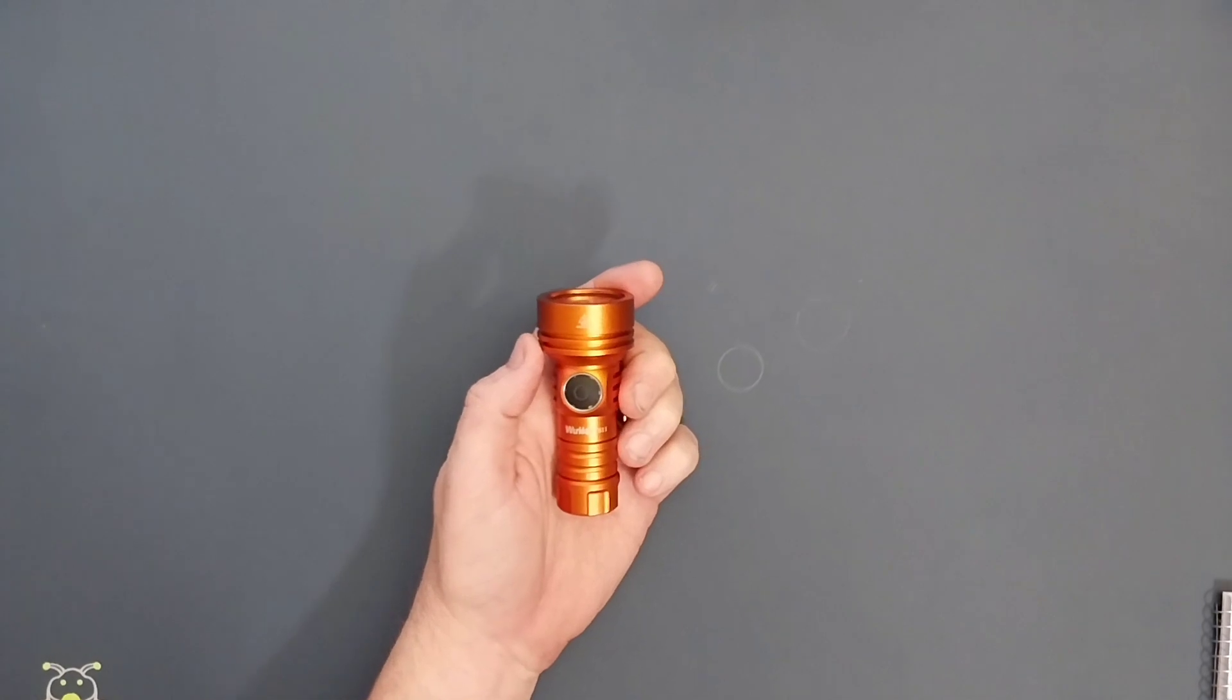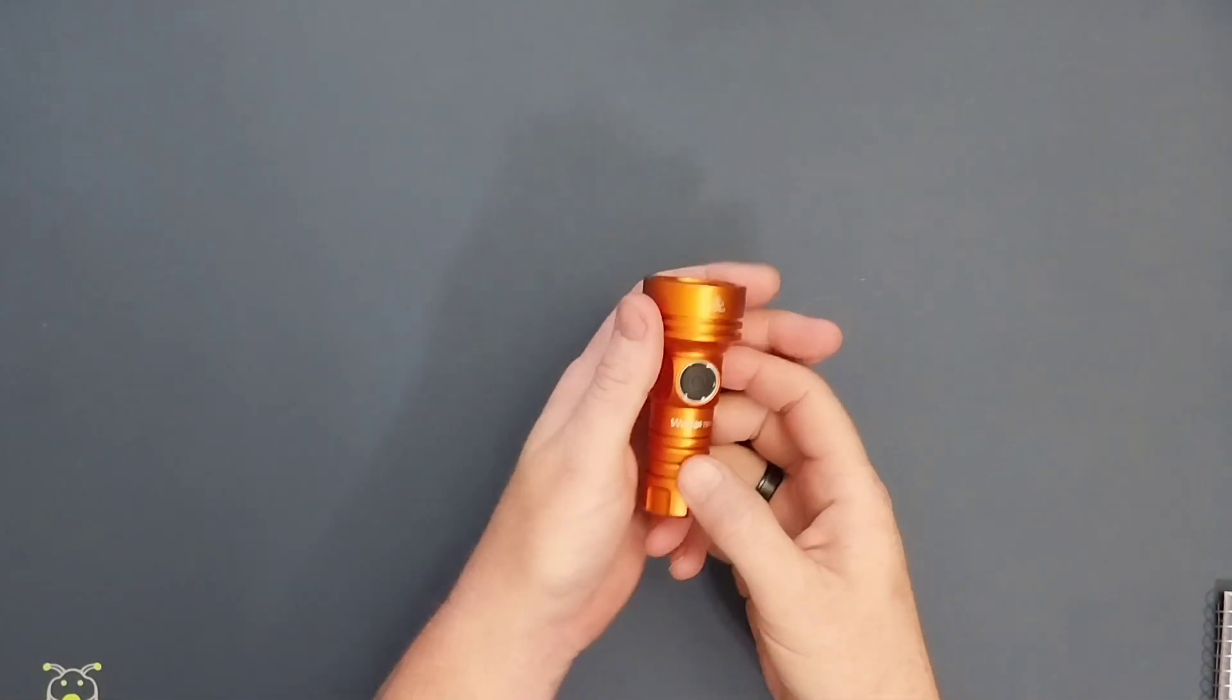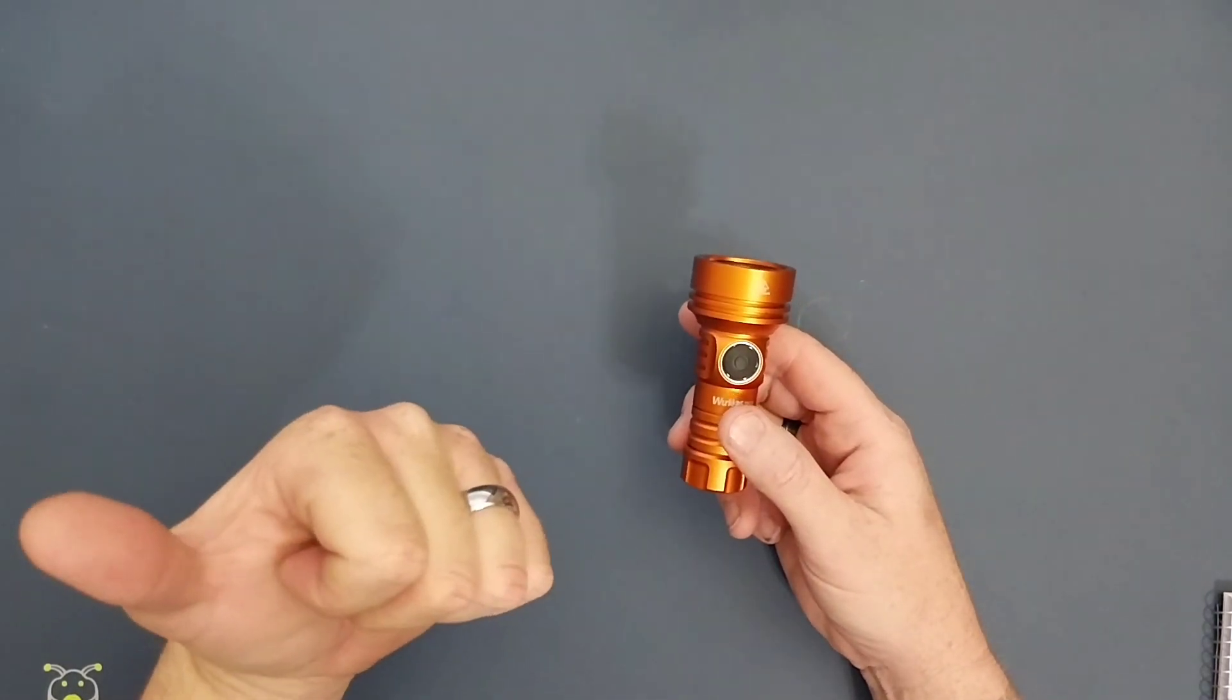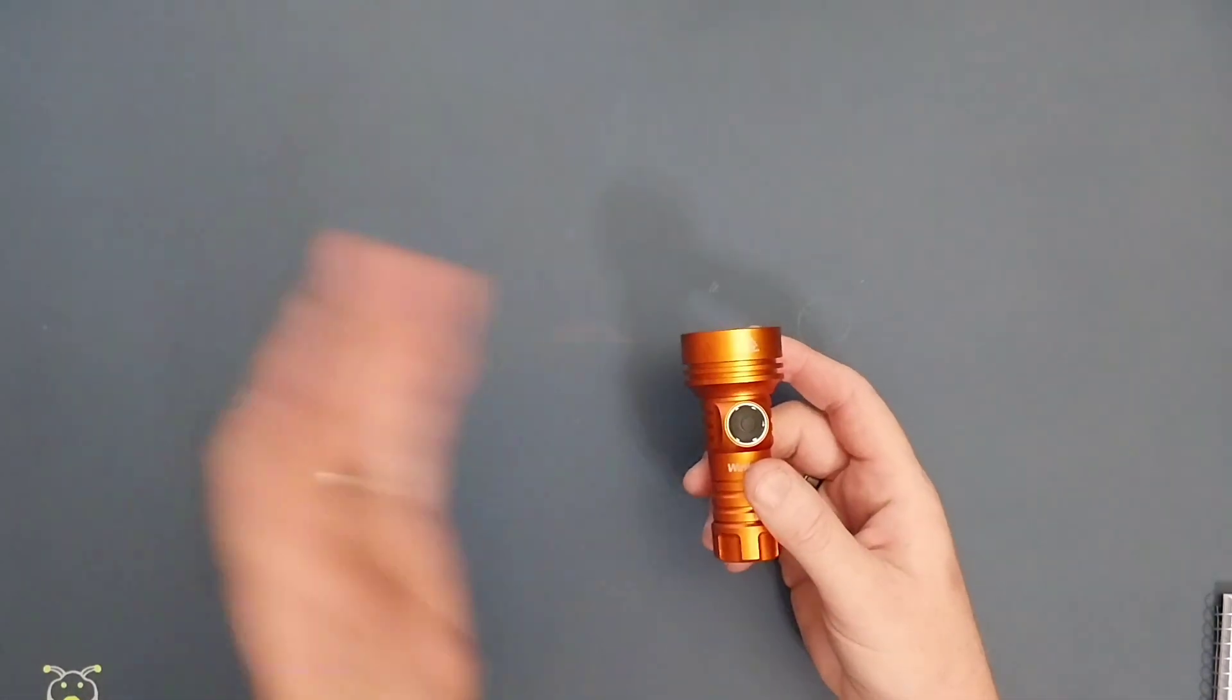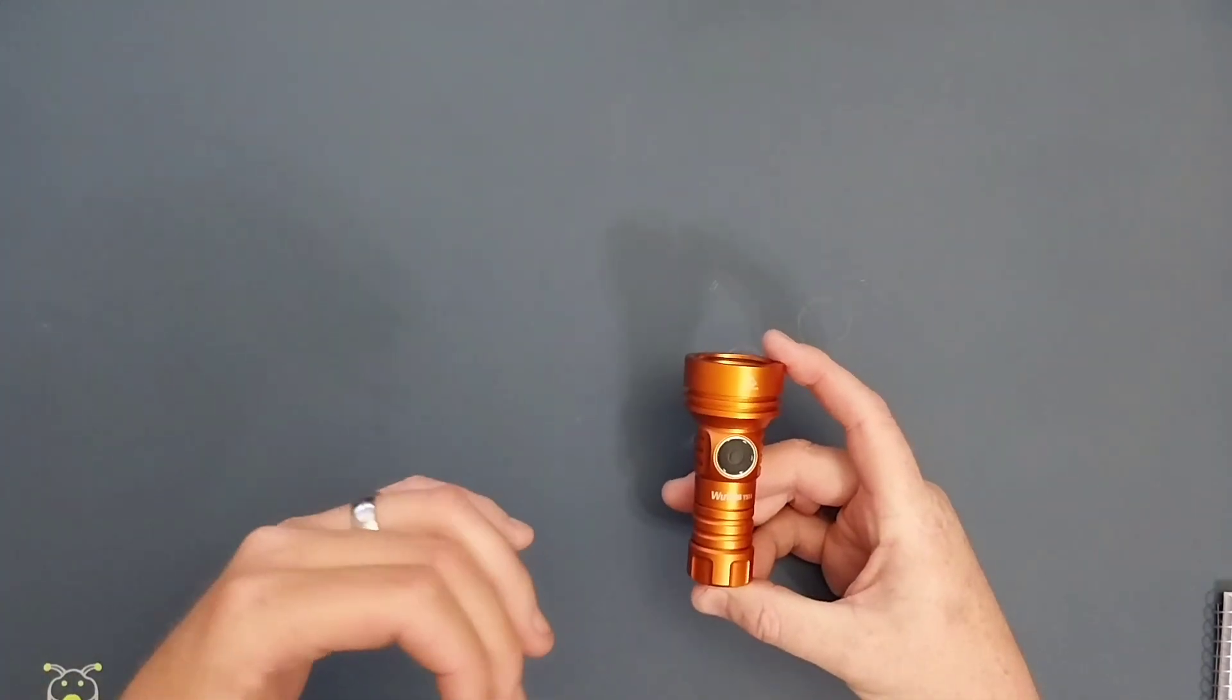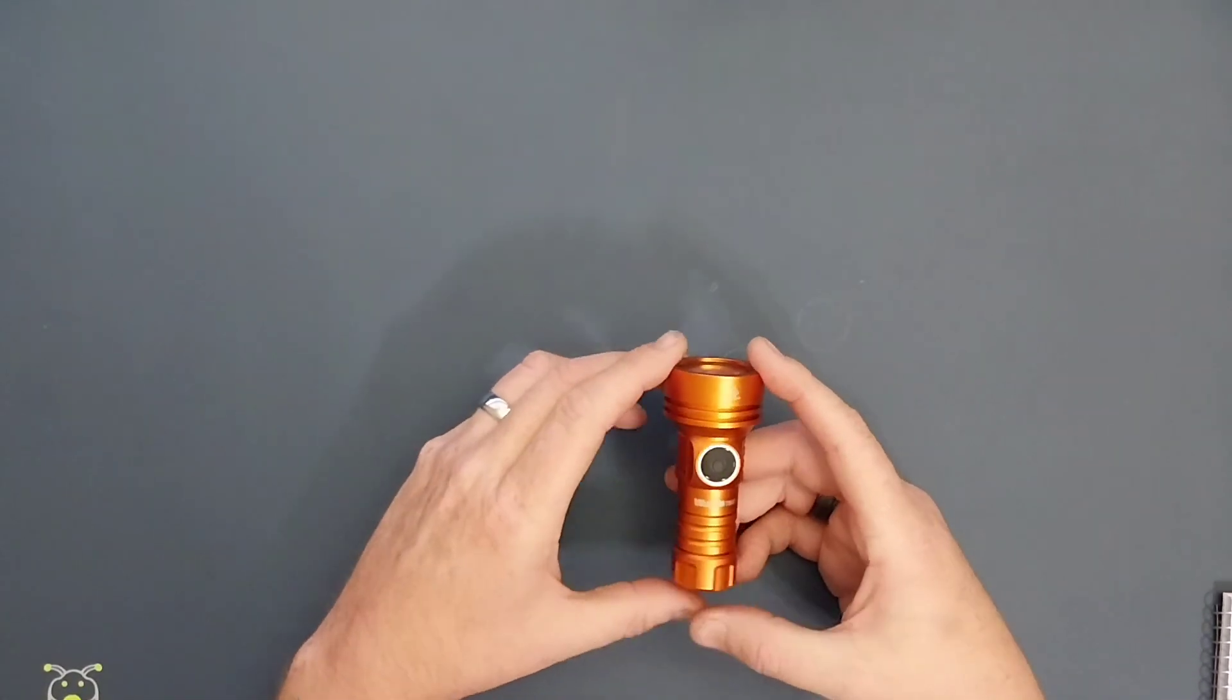All right, so this one like I said has the Anduril 2, so you can either have it set up to where it does like a lightning mode, it does a candle mode, it does a strobe mode, it does all kinds of stuff. We won't go into it on this video. If you guys want a more in-depth video on the Anduril 2, let me know down in the comments and we'll do a video on it, but we won't get into it for right now.